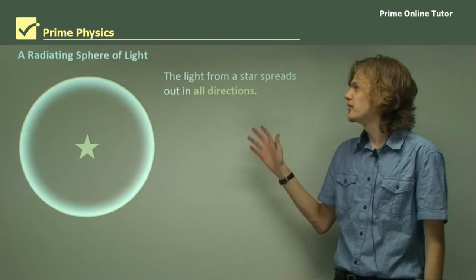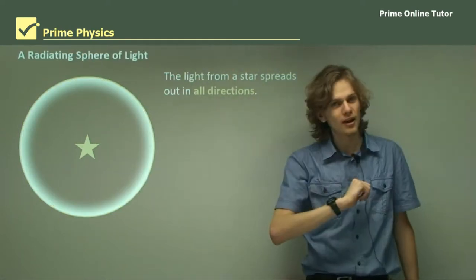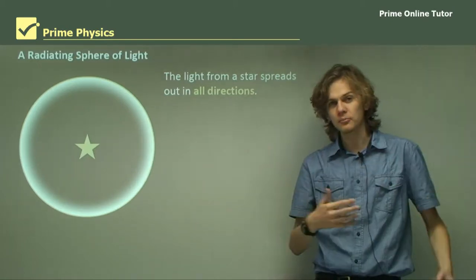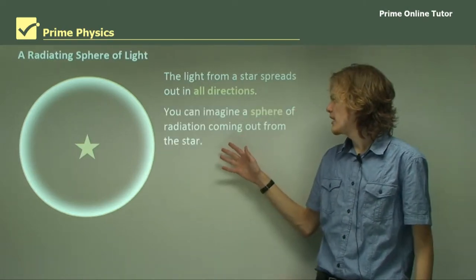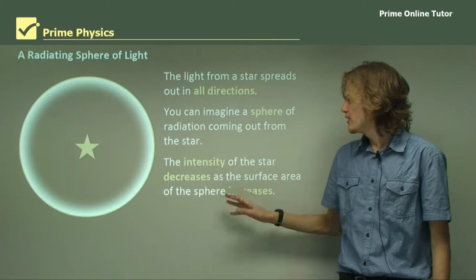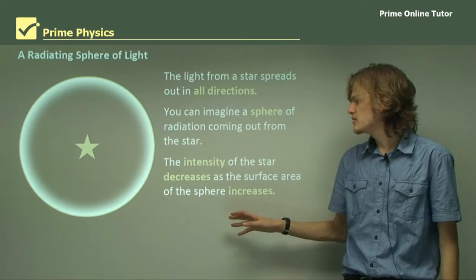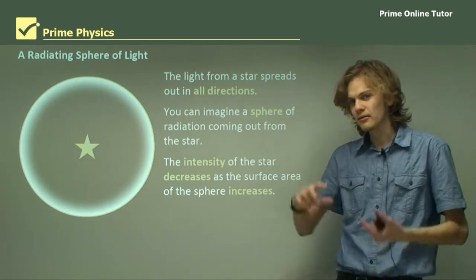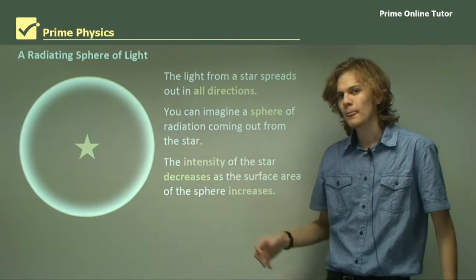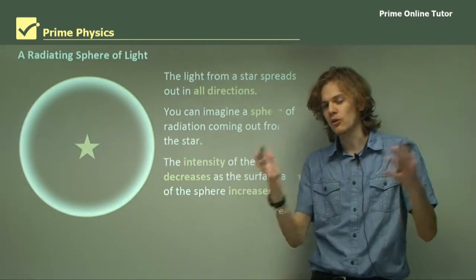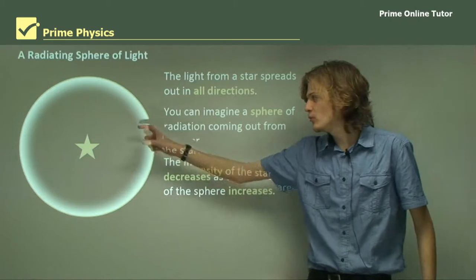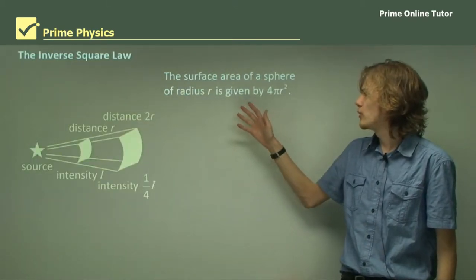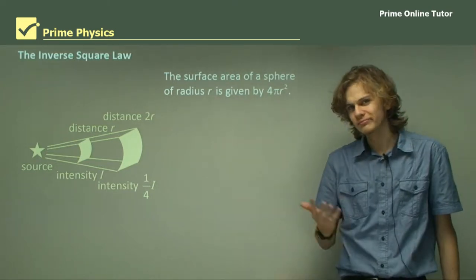Light from the star spreads out in all directions. We can think of it as a radiating sphere of light going forward, back, left, right, up, and down. The intensity decreases as the surface area of the sphere increases. The surface area of a sphere of radius r is given by 4πr². I'm sure you've seen it before.